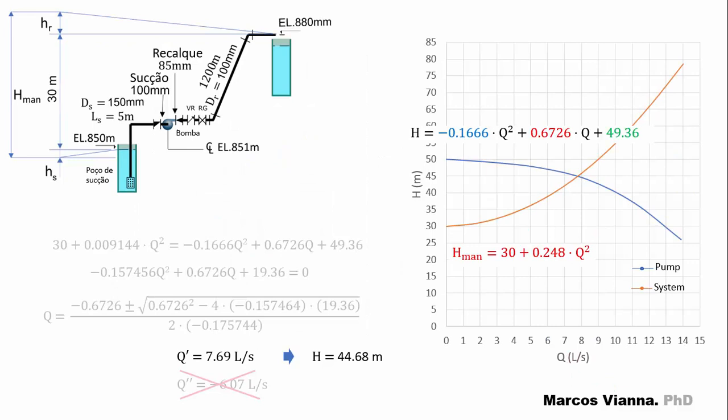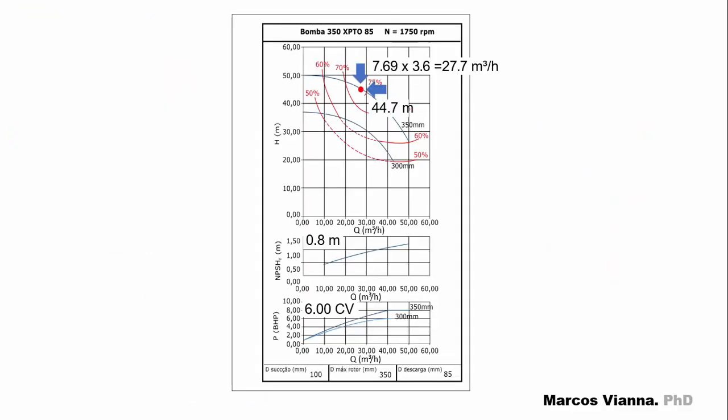As we saw, we solve it together with the system equation and find the value of Q, which allows us to find the value of H. Here is the operating point in the pump chart.